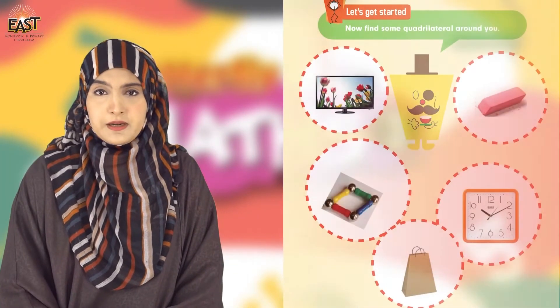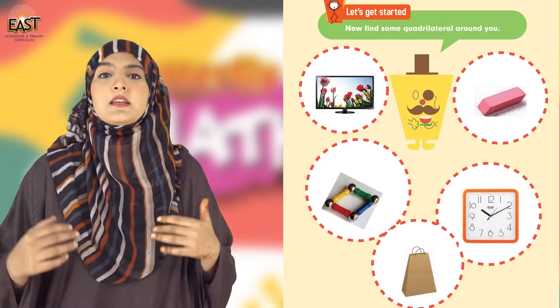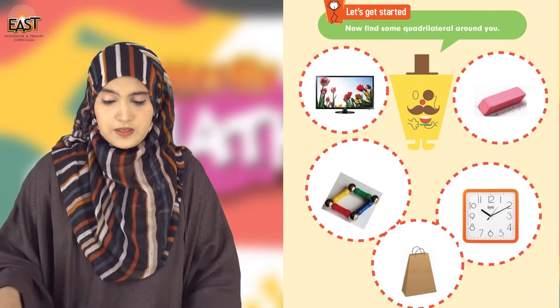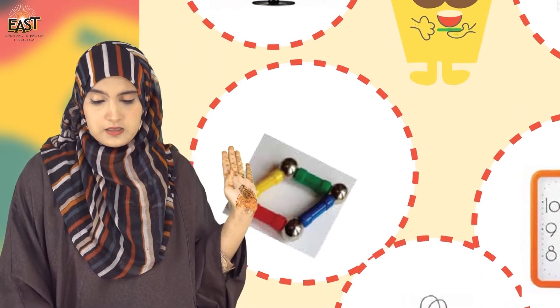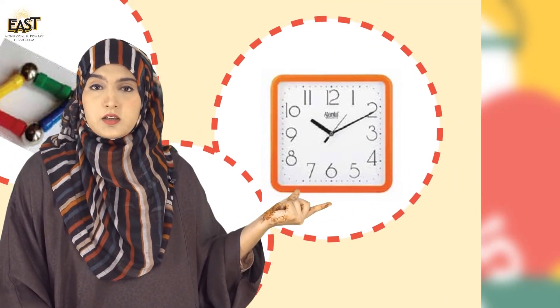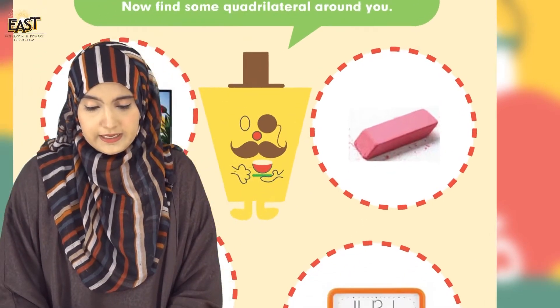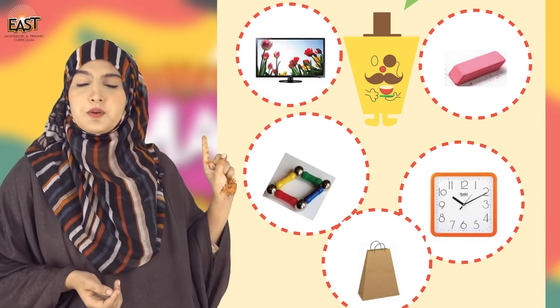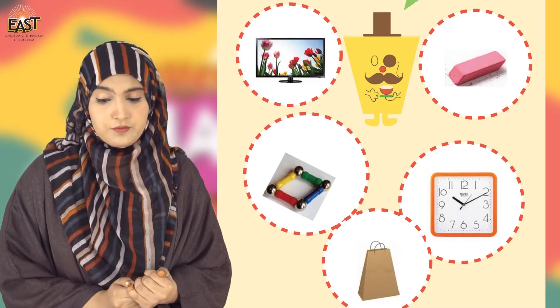We are going to do questions now, so take out your books at page number 113. Let's get started. The question is: find some quadrilaterals around you. There are quite a few shapes around us — you will find these things such as a TV, an anklet, a bag, an analog clock or table clock, and a razor. We have these pictures and we have to tell what shape each one has.